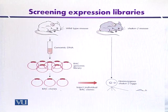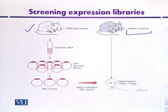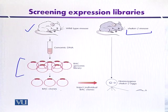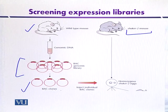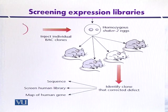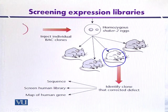This diagram illustrates the process of complementation to restore shaker 2 mutations in mice. From a wild type mouse with normal hearing, genomic DNA is extracted, digested with appropriate restriction enzymes, and ligated with bacterial artificial chromosomes. These BAC clones are screened for those containing the wild type sequence, then injected into homozygous shaker 2 mutant eggs. The mice grown from these eggs are then screened for the presence of normal hearing.